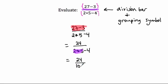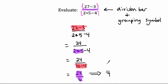Now I have 24 over 10 minus 4. The division bar is still a grouping symbol, so I need to complete the subtraction on the bottom first: 10 minus 4 is 6, giving 24 over 6. Now I can do the final division: 24 divided by 6 equals 4. Notice I started each line with an equal sign, kept them aligned, and that's how we use order of operations to evaluate more complicated math expressions.